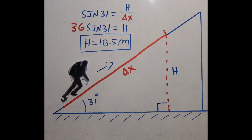Multiplying both sides by 36, we get 36 times sine of 31 equals H. Calculating this gives an altitude of 18.5 meters — this is the elevation he gained in 60 seconds, and this is what we were searching for.